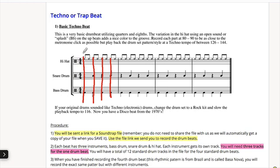What we have here are eighth notes. The first note is on the beat, and the second note is halfway between the beat. We could count: one and, two and, three and, four and. Or I use the rhythm syllables: U-ta, U-ta, U-ta, U-ta. The U goes on the click and the ta is halfway between.